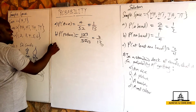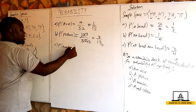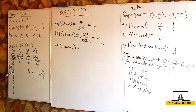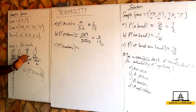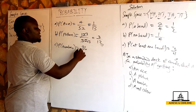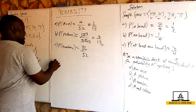Now we can talk about the probability of getting a number. The numbers are 10, 9, 8, 7, 6, 5, 4, 3, 2 — that's nine numbers. Nine numbers multiplied by four suits (heart, diamond, club, and spade) gives us 36. So the probability of getting a number is 36 over 52.